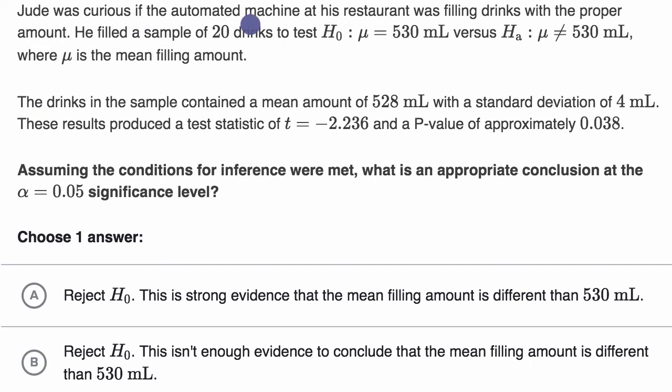Jude was curious if the automated machine at his restaurant was filling drinks with the proper amount. He filled a sample of 20 drinks to test his null hypothesis, which is the actual population mean per drink is 530 milliliters, versus his alternative hypothesis that the population mean is not 530 milliliters.